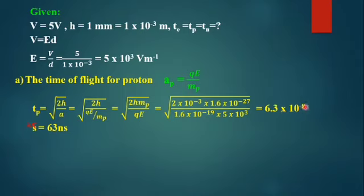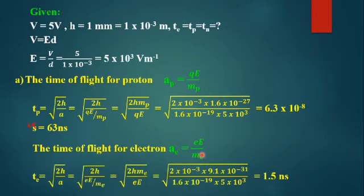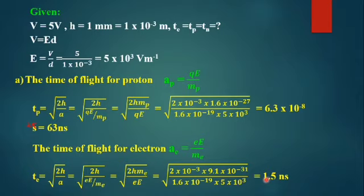For the electron, the same approach applies: we find the acceleration and substitute into the time of flight equation. The square root of the substituted values finally gives us t_e = 1.59 nanoseconds.